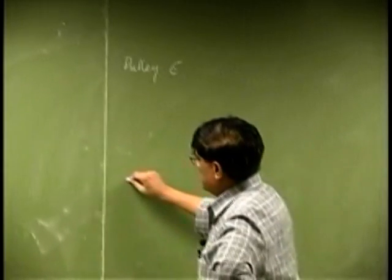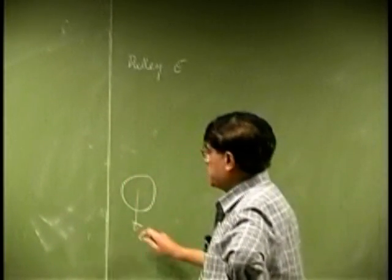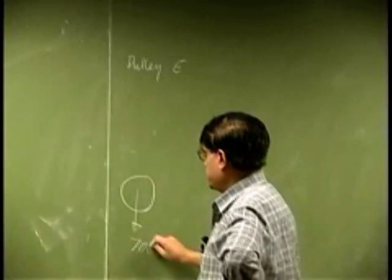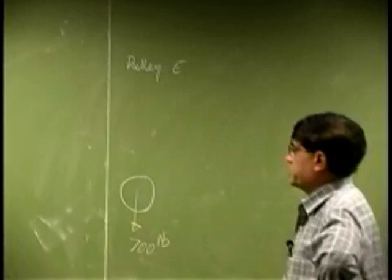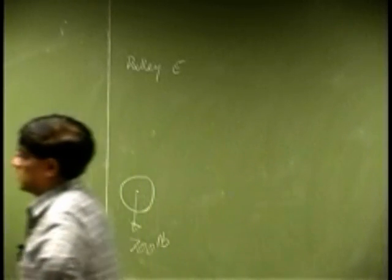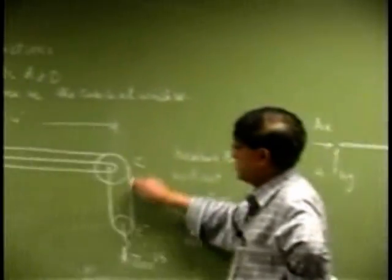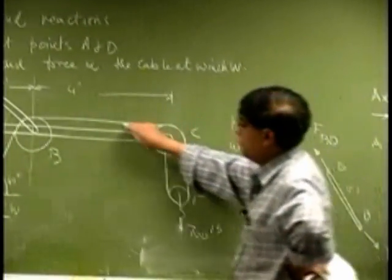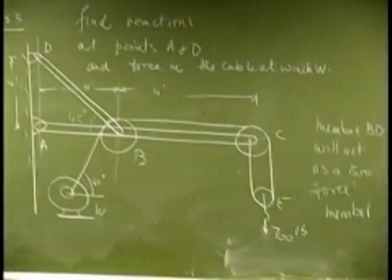On pulley E, we already know there is a crane which is exerting a weight of 700 pounds in downward direction. That's the applied force. Then you have this cable goes around, comes back and goes over, then goes over and attaches at the winch.